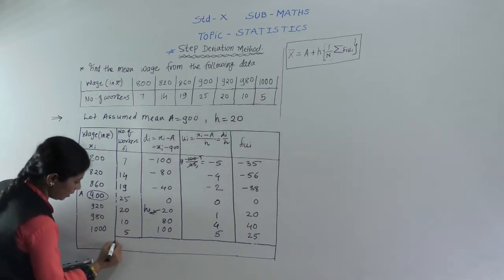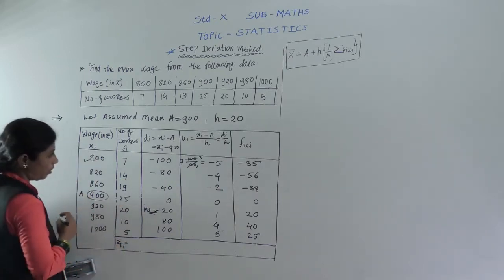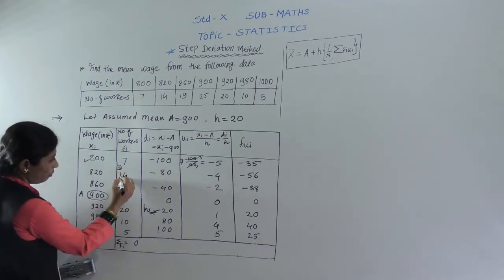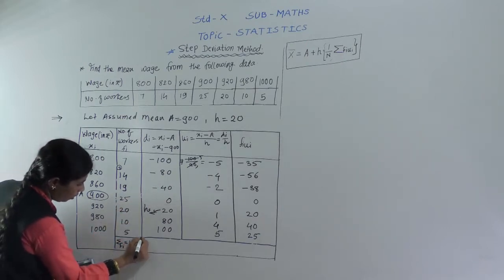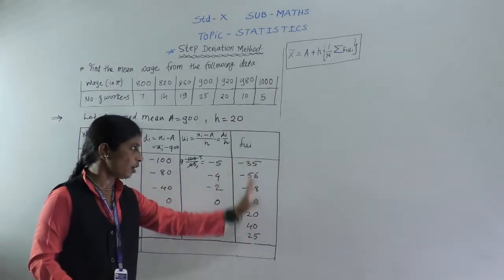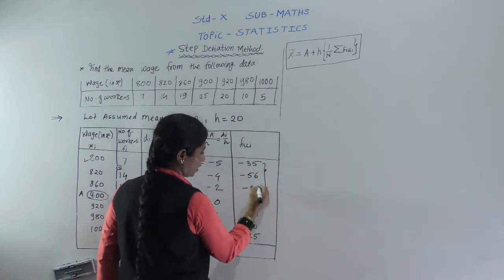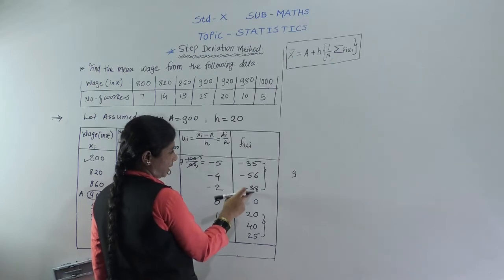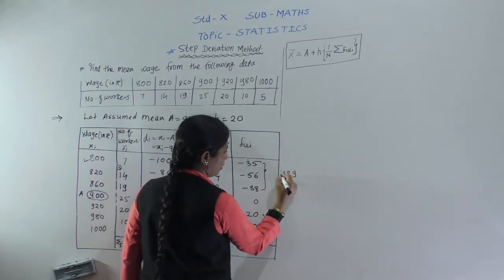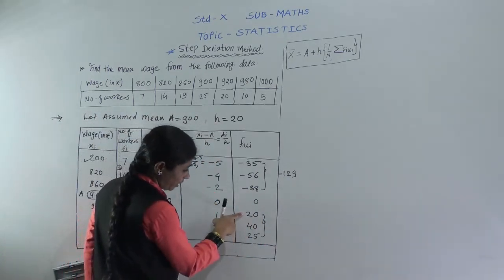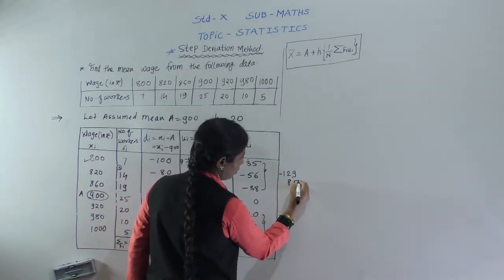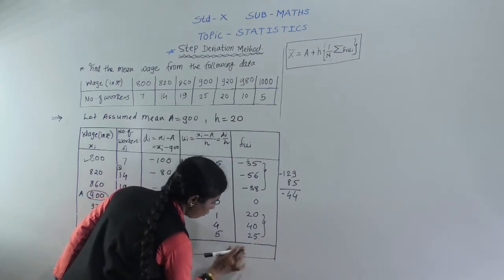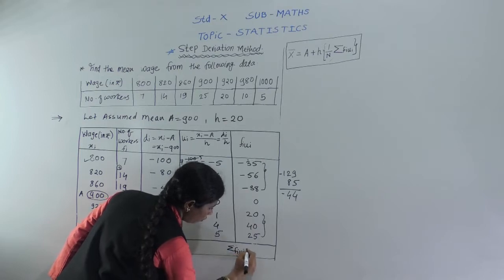Now we find the summation of fi: 7+4+9+20+20+10+5 = 100, so summation of fi equals 100. Then we sum all fi·ui: −35 + (−16) + (−18) + 0 + 20 + 40 + 25. The positive values sum to 85 and the negative values sum to −69, but adding carefully gives summation of fi·ui equals minus 40.